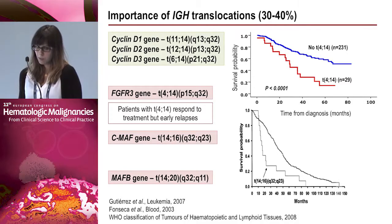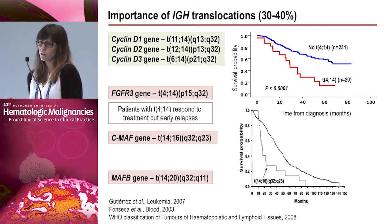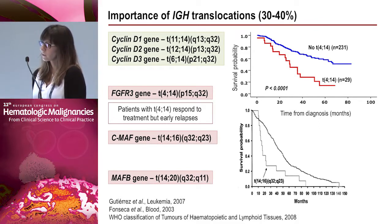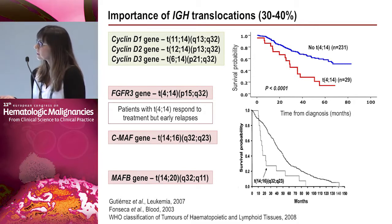Considering the genetic landscape of multiple myeloma, we can divide patients into two groups. Hyperdiploid multiple myeloma, around 60% of cases, is characterized by trisomies of odd chromosomes. Non-hyperdiploid multiple myeloma is characterized by IGH gene translocations, deletions, and monosomies. IGH translocations affect 30-40% of cases and have heterogeneous partners. Translocations with cyclin genes — t(11;14) with cyclin D1, t(12;14) with cyclin D2, and t(6;14) with cyclin D3 — are all considered good-prognosis translocations.